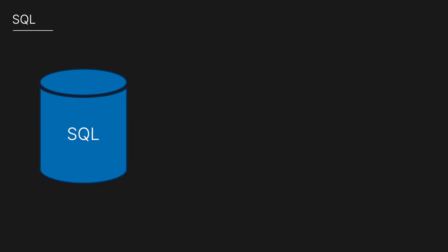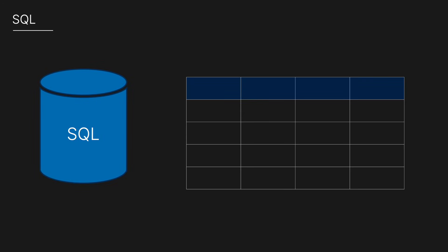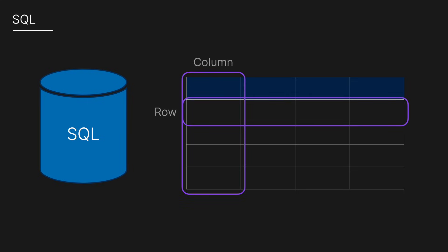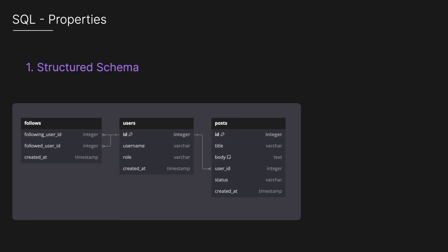SQL stands for Structured Query Language, and it's the standard language for relational database management systems. SQL is designed to handle structured data, meaning data that fits nicely into tables with rows and columns. The key properties include a structured schema — predefined schemas that strictly enforce data organization — and a relational model, where data is stored in tables and relationships are defined via foreign keys.